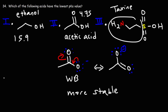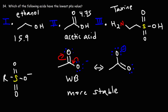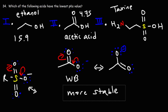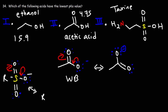Now let's look at taurine — I'll use an R group for part of the structure. Let's draw the conjugate base of taurine. If we draw the resonance structures, notice that we can place the negative charge on three oxygen atoms as opposed to two. So the conjugate base of taurine's sulfonic acid group is even more stable than the acetate ion. We can put the negative charge on the third oxygen atom as well.